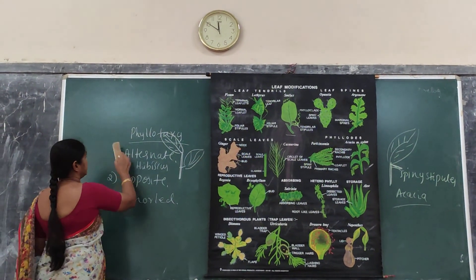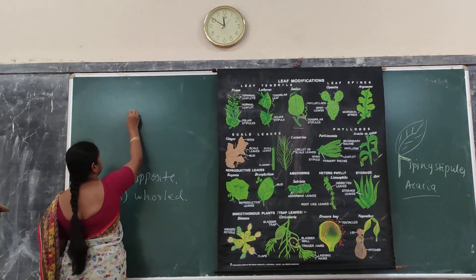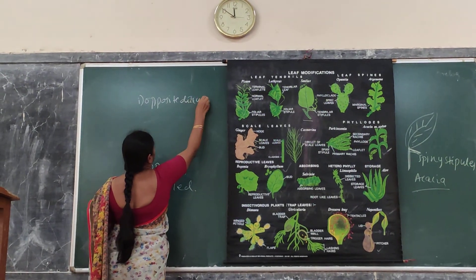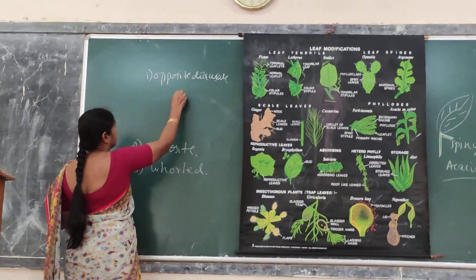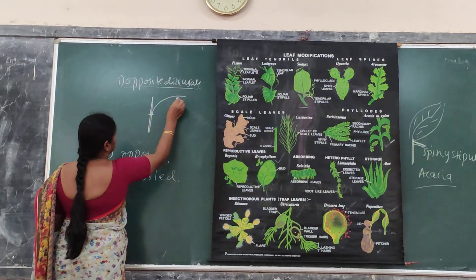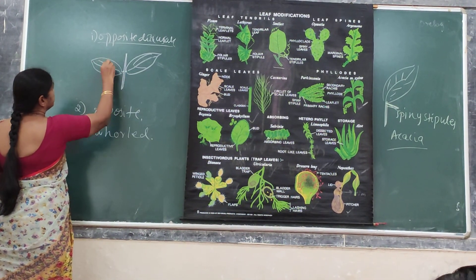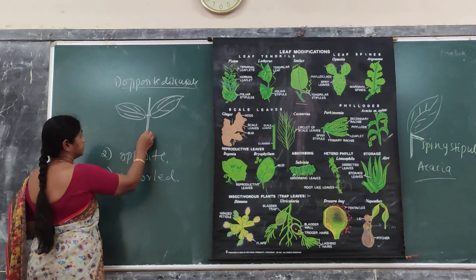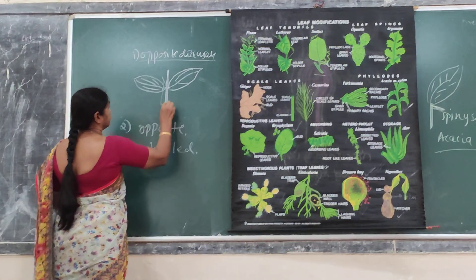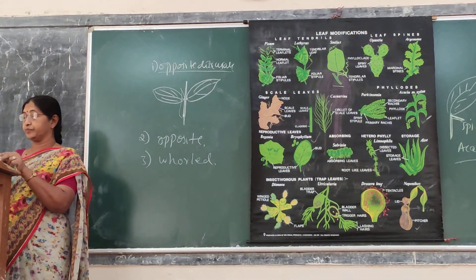Now coming to opposite phyllotaxy — there are two types: opposite decussate and opposite superposed. In opposite decussate, two leaves are arranged in the east-west direction from one node, and from the next node they are arranged in the north-south direction.